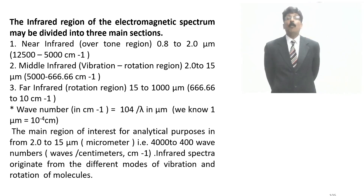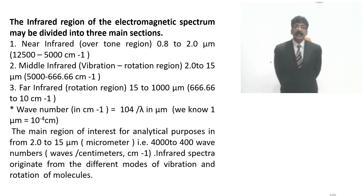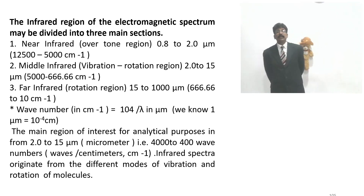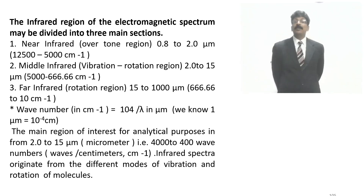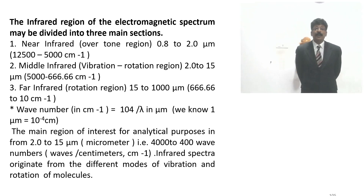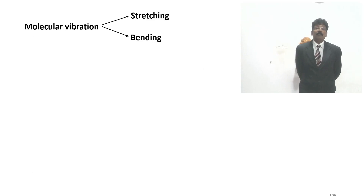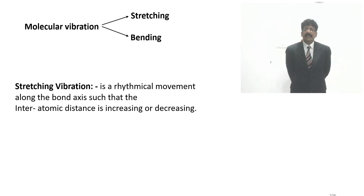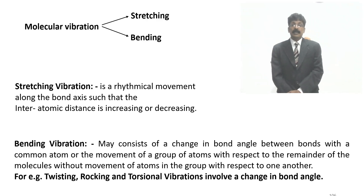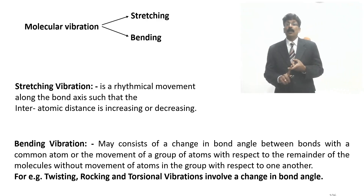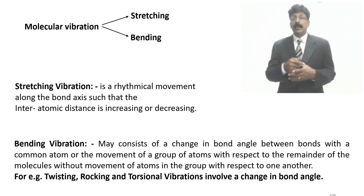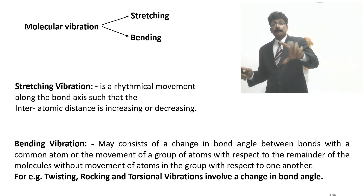The main region of analytical interest is the middle infrared: 2 to 15 microns, or 4000 to 400 wavenumbers (cm⁻¹). Infrared spectra originate from different modes of vibration and rotation of the molecule. Stretching vibration is a rhythmic movement along the bond axis such that the interatomic distance increases or decreases. Bending vibration involves a change in the bond angle between bonds sharing a common atom.